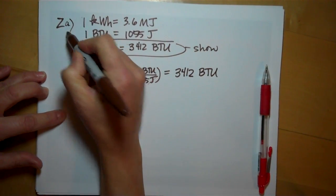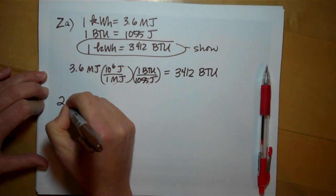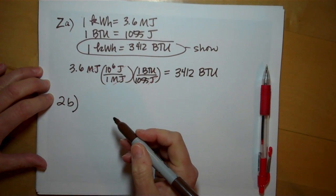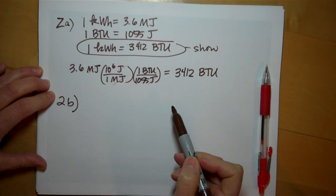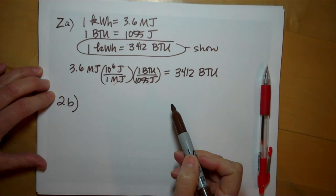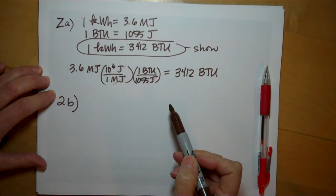But that's part A. Number two, part B asks, why would it be incorrect to use this conversion factor directly to determine the amount of coal required to generate in a power plant?